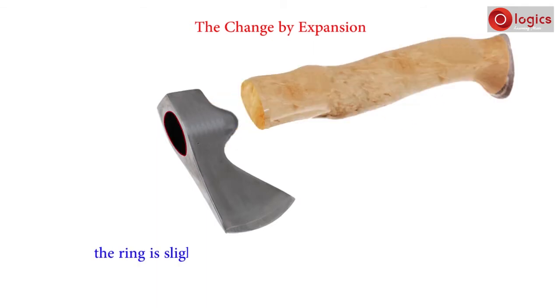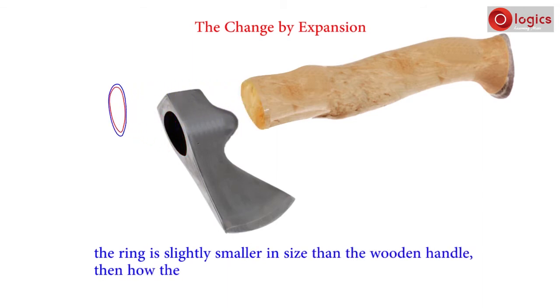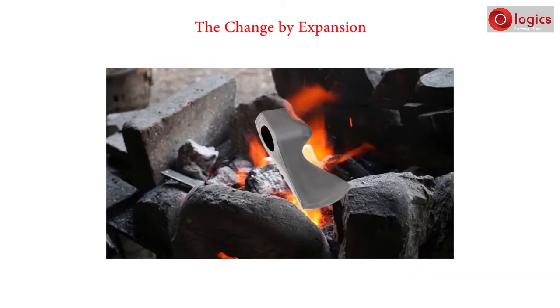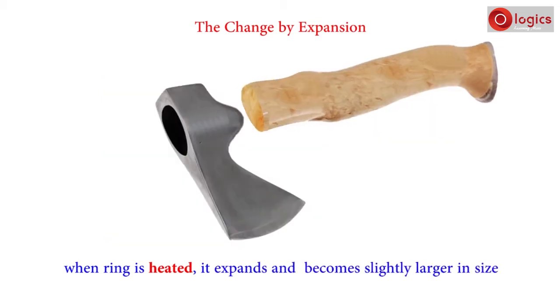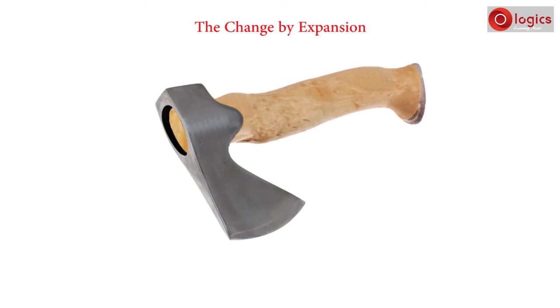Normally, the ring is slightly smaller in size than the wooden handle. Then how does the wooden handle fix tightly in the iron ring? When the ring is heated, it expands and becomes slightly larger in size. Now, the handle easily fits into the ring.